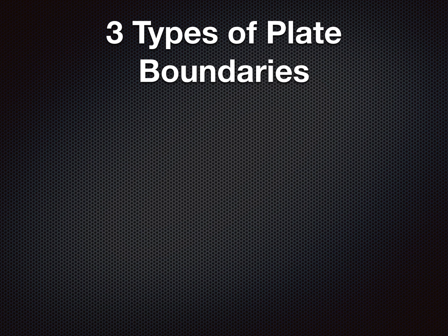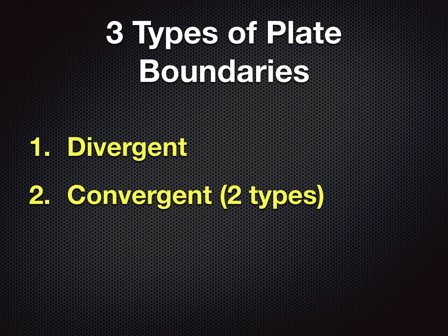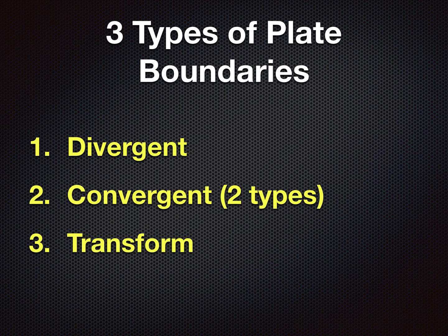There are three types of plate boundaries that are big in this unit. There's divergent — do not confuse it with the movie. Convergent, which is the most confusing because there's two types, and we'll talk more about that in a little bit. And transform. You need to know the three types of plate boundaries, and in this unit you need to know what makes them each unique or different from one another. We will focus on three major differences: movement, what they do to the crust, and what landforms they create. So let's start with plate movement.